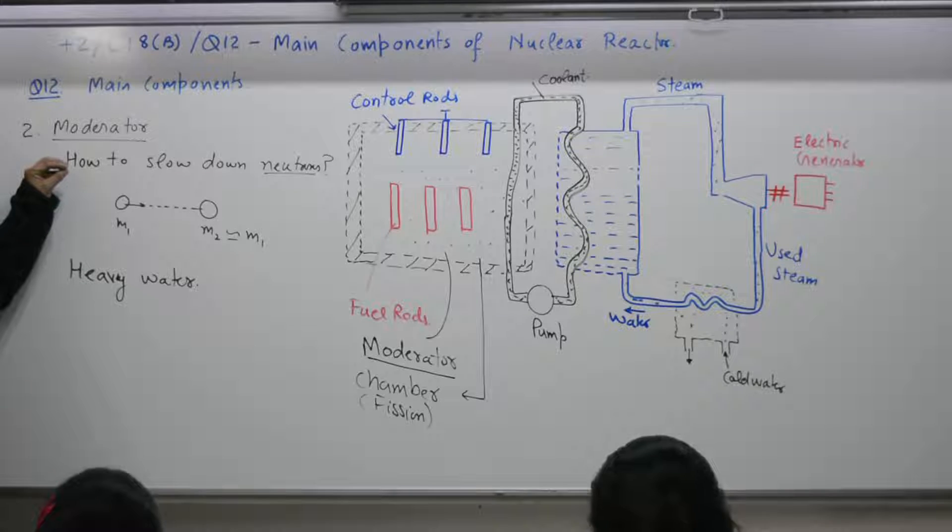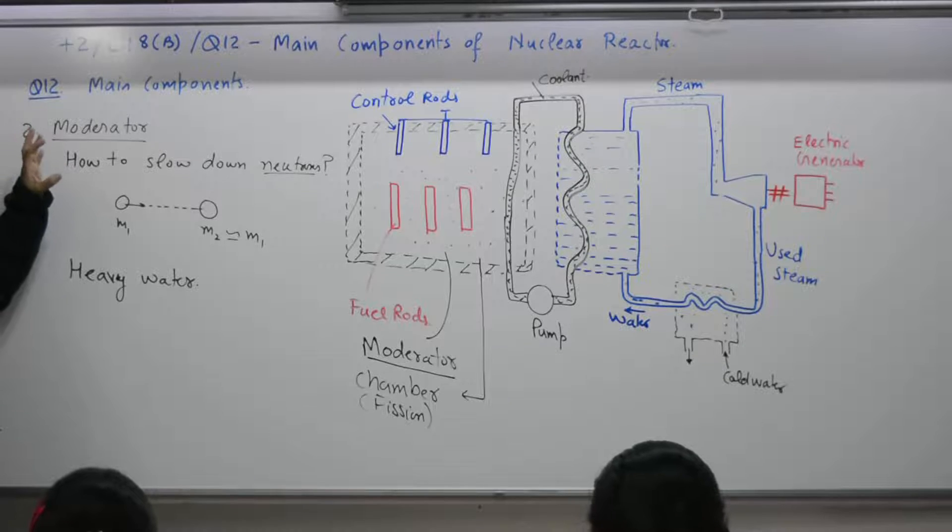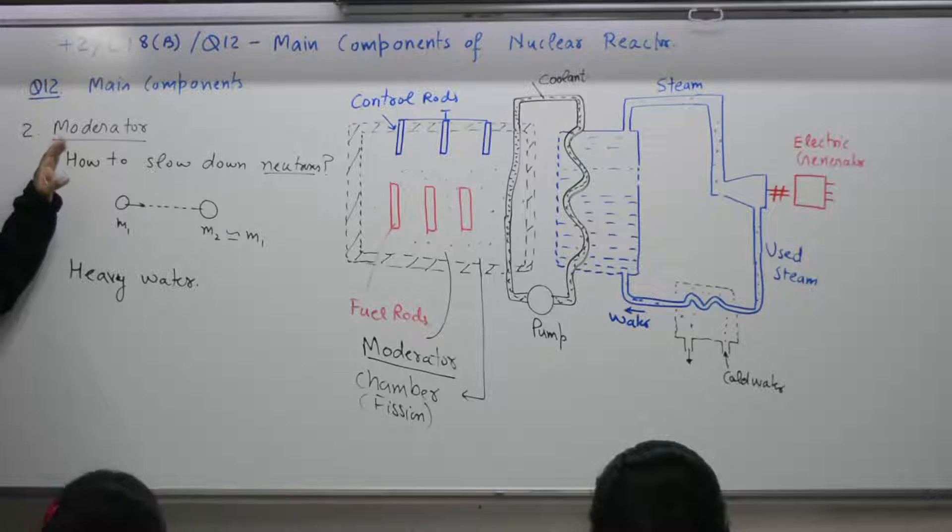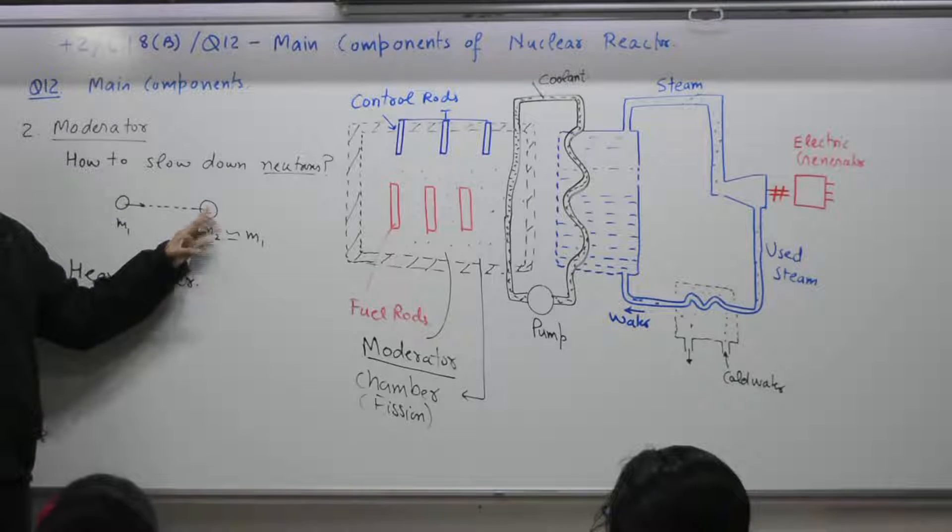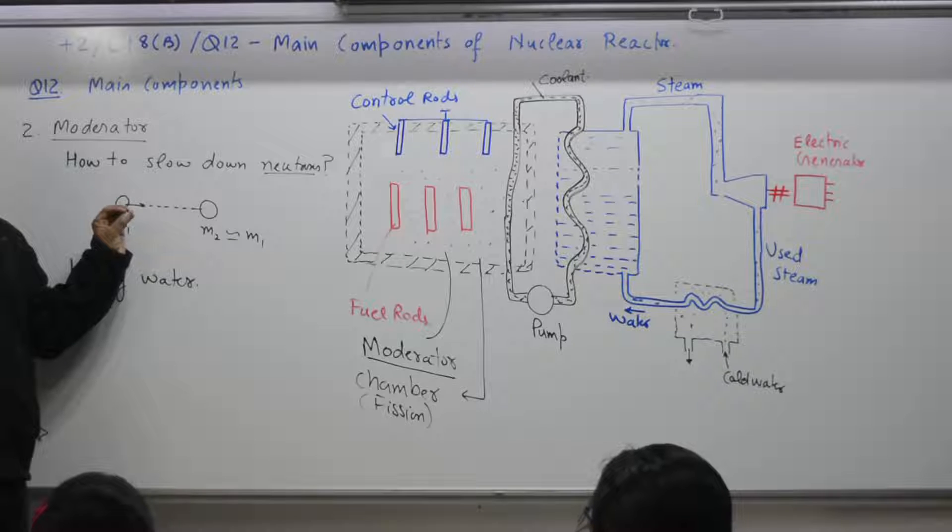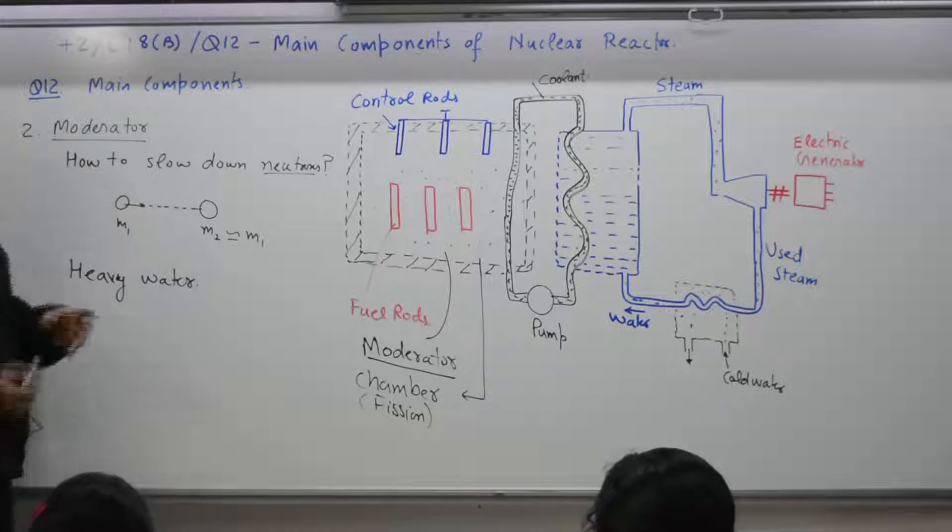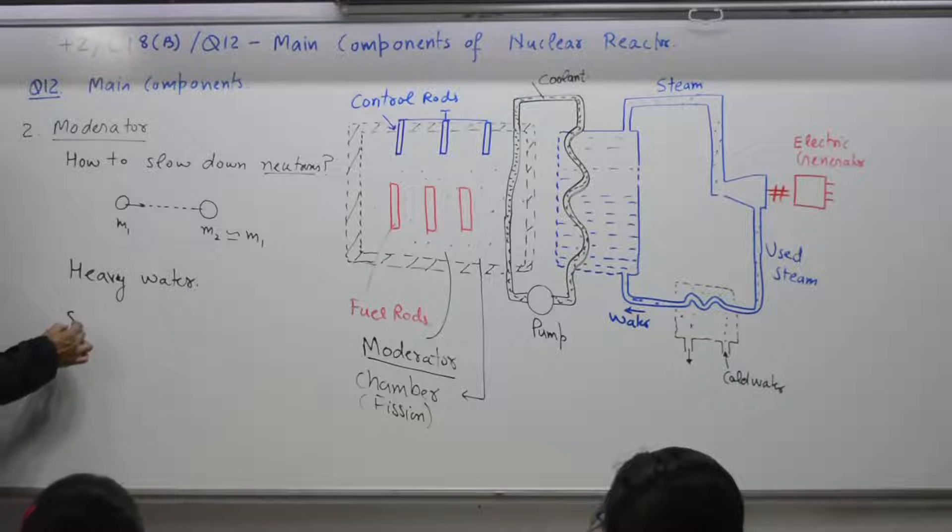So, repeat. For causing fission, fast neutrons are required or slow? Slow. But the neutrons available are fast. We want to slow down the neutrons. What is the process? Place comparable mass on its path. It will lose energy. So, fast moving neutron becomes a slow moving neutron. Once it is termed to slow neutron.